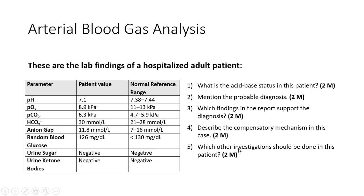Which other investigations should be done in this patient? Serum electrolytes and urine pH should be done. Specifically, sodium, potassium, and chloride — because for anion gap calculation, the concentration of these ions is important. This was the case for arterial blood gas analysis. Parameters and questions may change, but the overall interpretation approach remains: go for pH first, then PO2, PCO2, and bicarbonate.